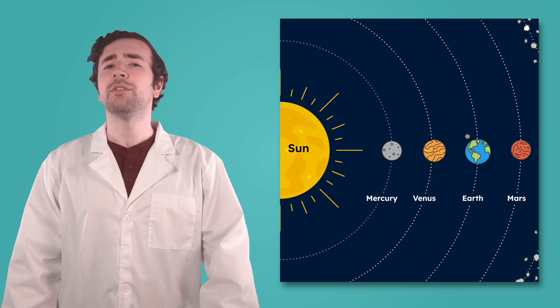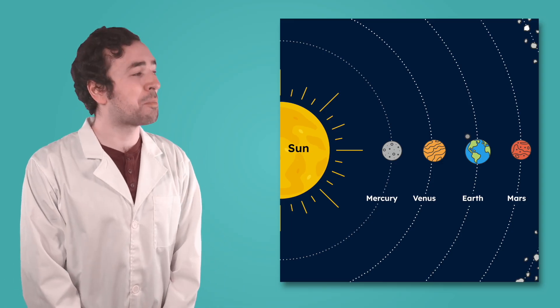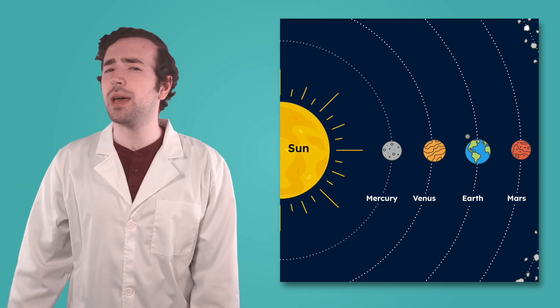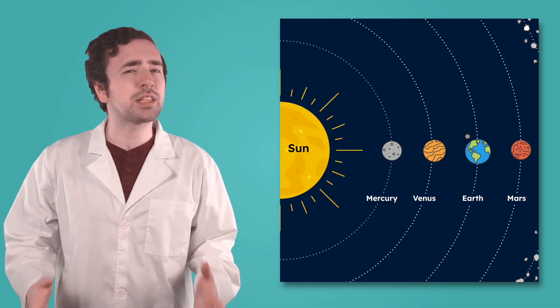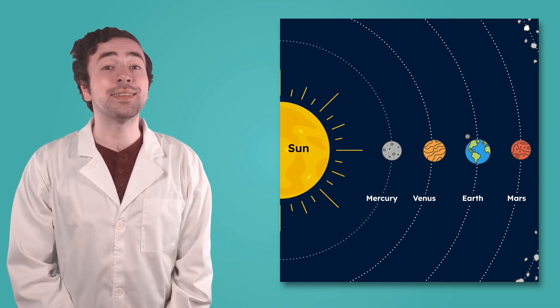So, Mercury, Venus, Earth, and Mars. The inner planets may all be small and rocky, but each one is unique with its own features, atmosphere, and conditions.